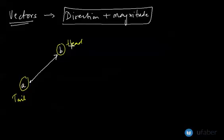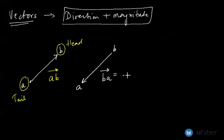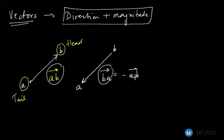This vector is represented as vector AB. If we reverse the direction — B becomes the tail and A becomes the head — it is written as vector BA, which is the opposite of vector AB. However, you can only put a negative sign provided vectors AB and BA are parallel.